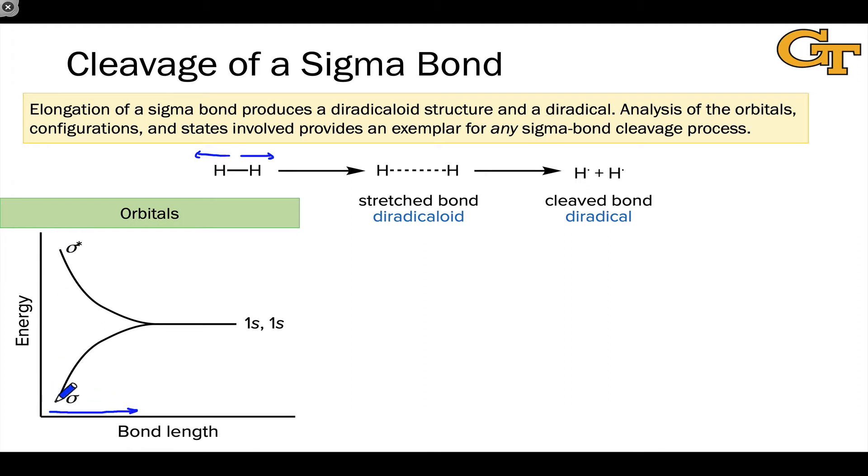What we're looking at here are the energies of the sigma and sigma star orbitals as we move the hydrogens farther apart from one another. At some point, we reach a structure where the bond is stretched, but the electrons are still interacting with each other. This is a classic diradicaloid. We're starting to get independent electron character near each hydrogen atom, but the electrons are still interacting quite strongly. And so this is really a diradicaloid rather than a pure diradical.